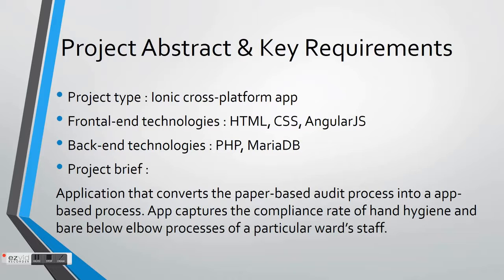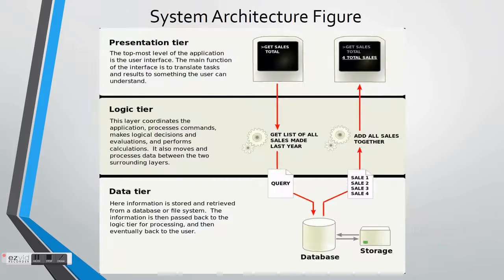Moving on to the system architecture slide, we researched iconic system architectures and design, and found that the multi-tier architecture was what we were looking for. We used a three-tier architecture, namely a client-server architecture which separates functional process logic, data access, data storage, and user interface into different modules that can be maintained and developed upon independently. Upgrading is also made easier using this three-tier system architecture.